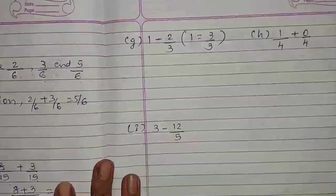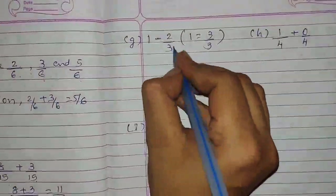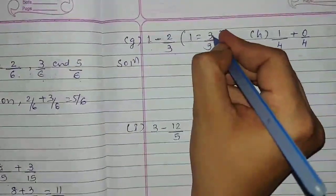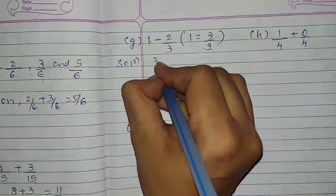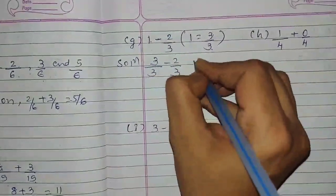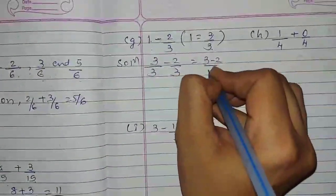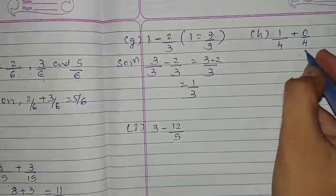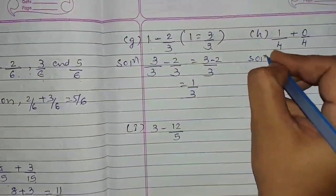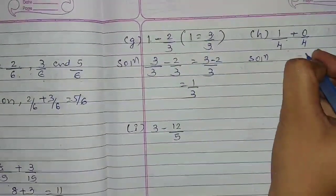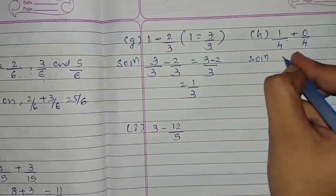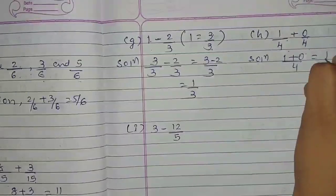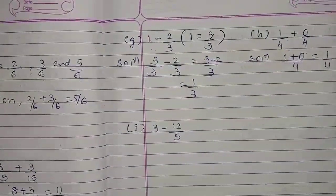Question G: 1 minus 2 upon 3. We take 1 as 3 upon 3. So the solution is 3 upon 3 minus 2 upon 3 — like fractions — so 3 minus 2 upon 3 equals 1 upon 3. Question H: 1 upon 4 plus 0 upon 4. Like fractions, so 1 plus 0 upon 4 equals 1 upon 4.